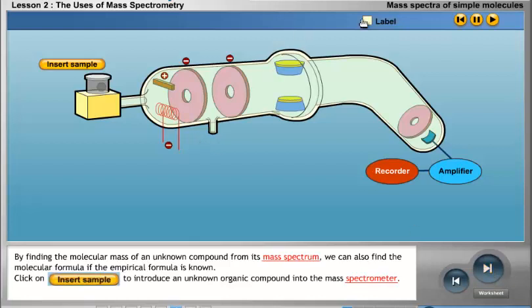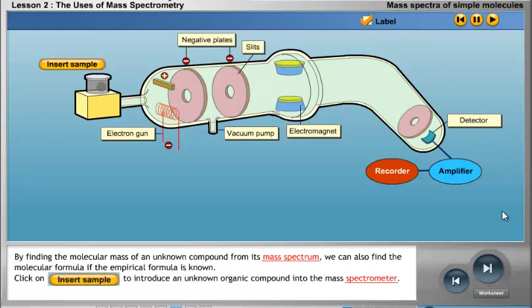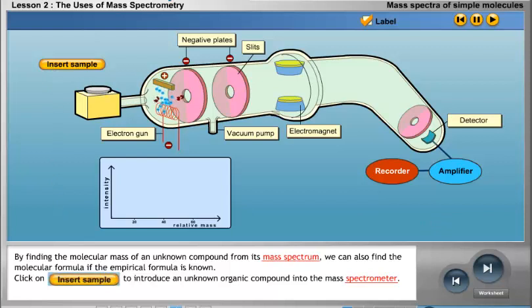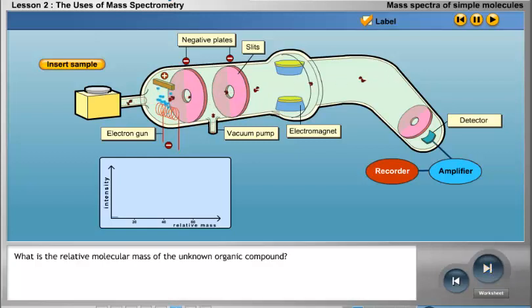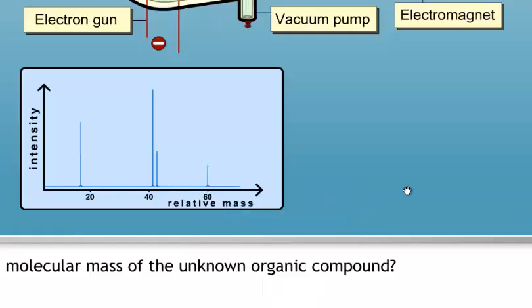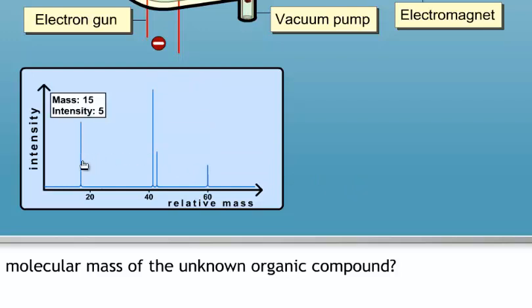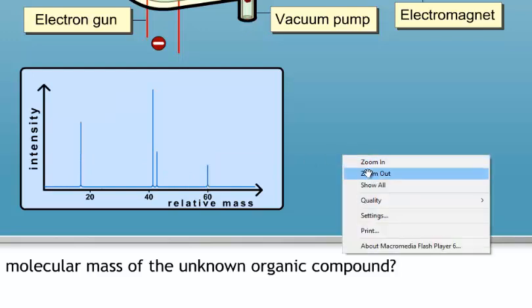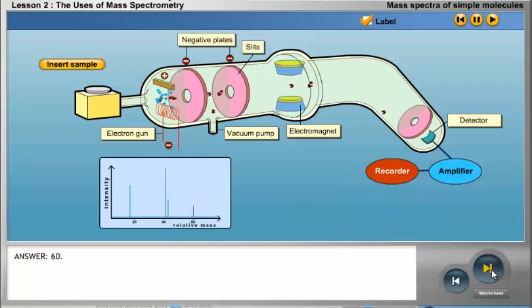By finding the molecular mass of an unknown compound from its mass spectrum, we can also find the molecular formula if the empirical formula is known. A sample of an unknown organic compound is introduced into the mass spectrometer. The relative molecular mass of the unknown organic compound is 60.